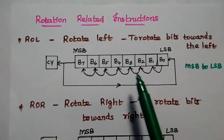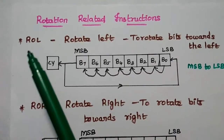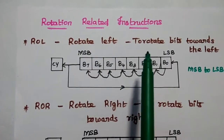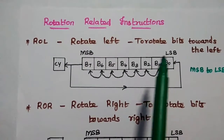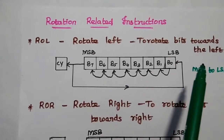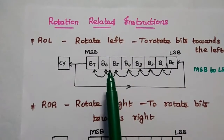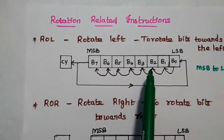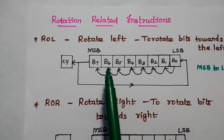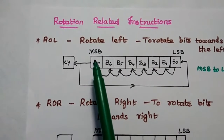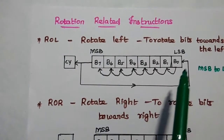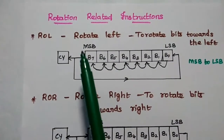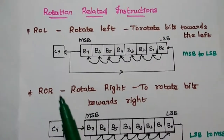Next are Rotation-related instructions. ROL is Rotate Left — it rotates the bits of the given register towards the left side. Starting from LSB: B0 to B1, B1 to B2, B2 to B3, and so on. The MSB is given back to the LSB. We do not involve the carry flag in this operation.